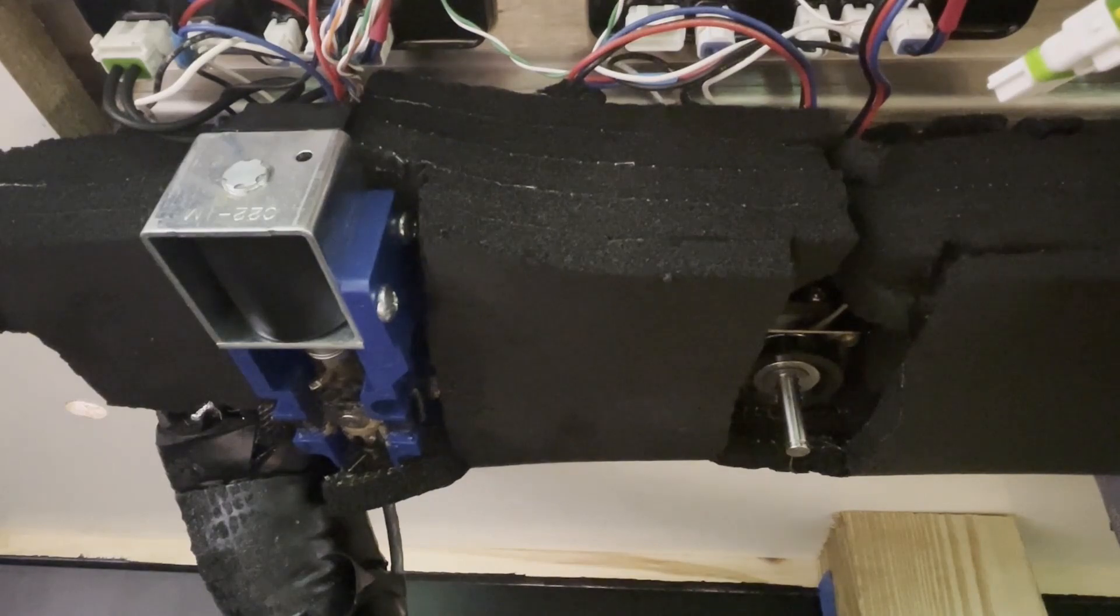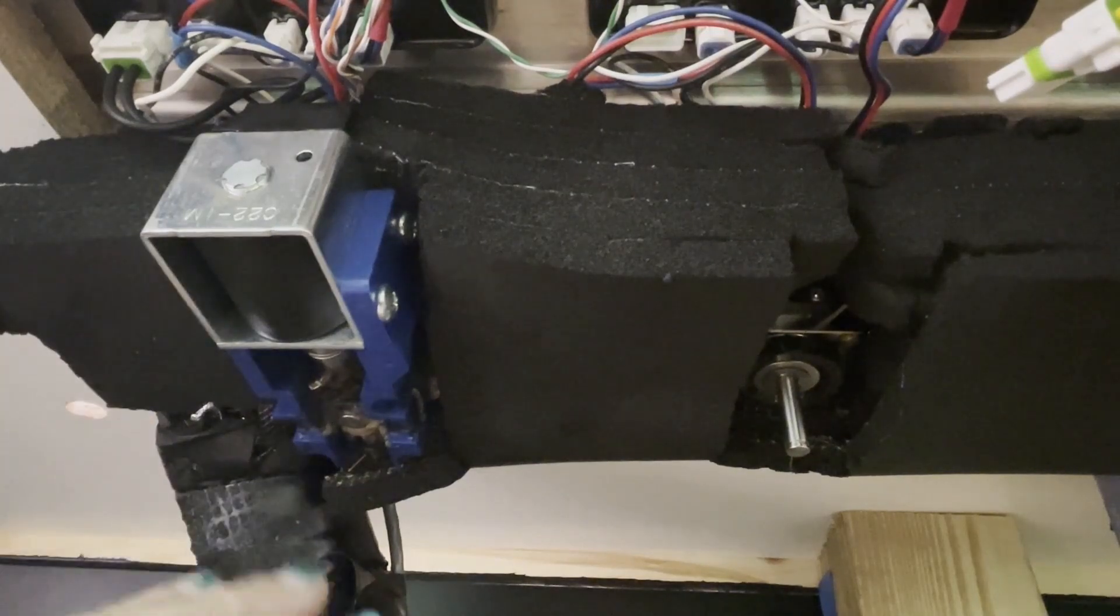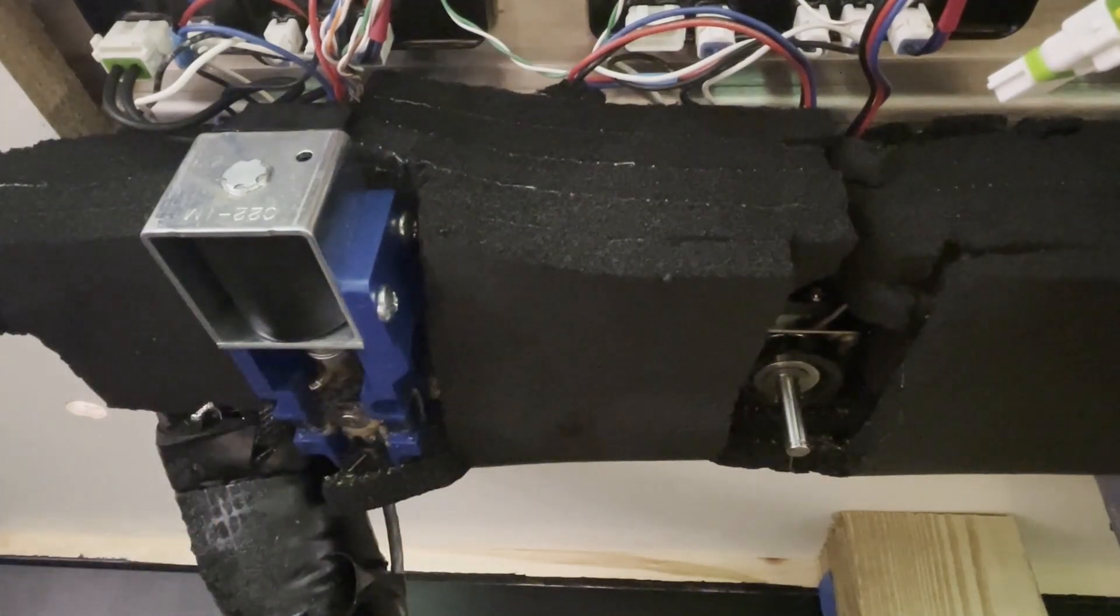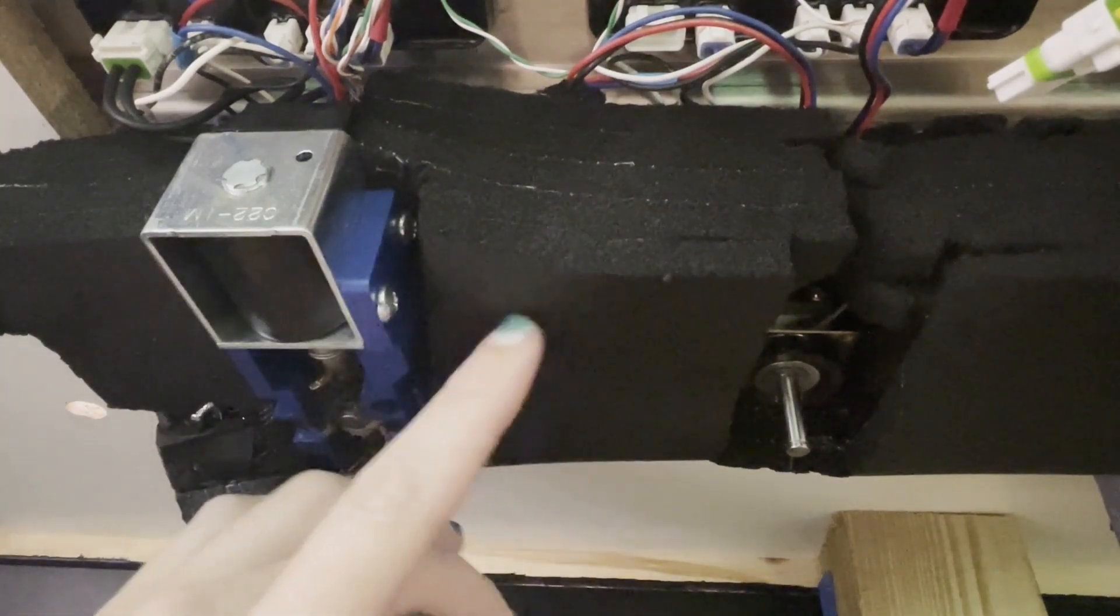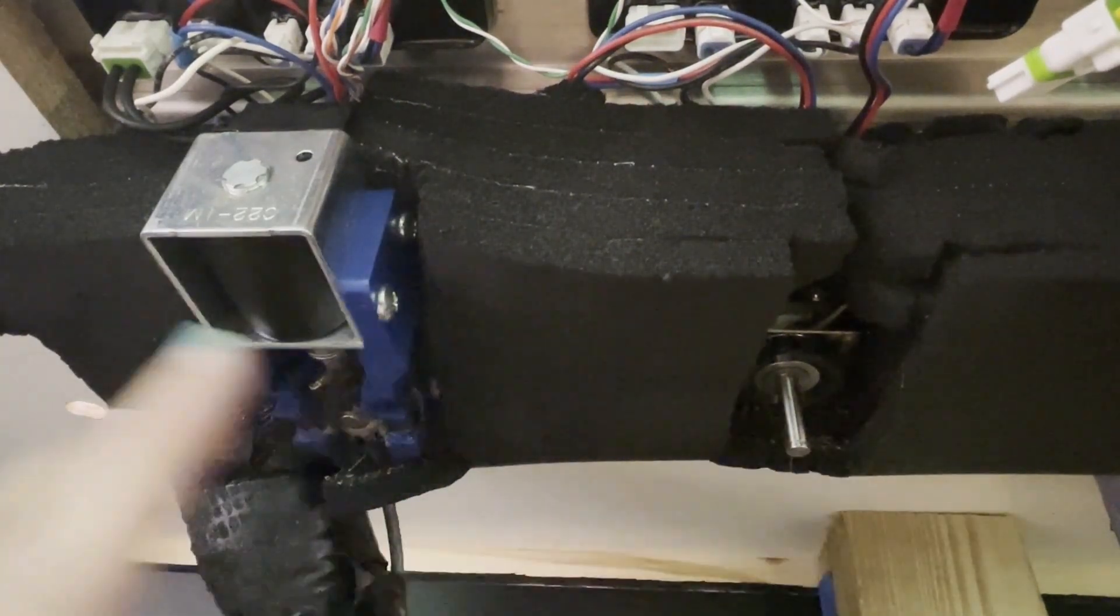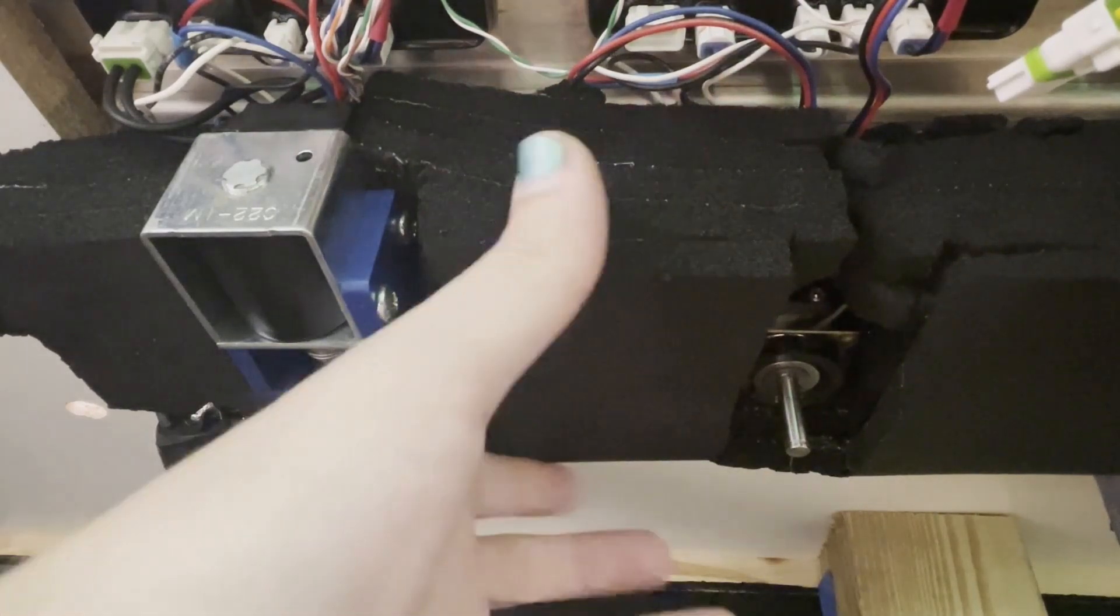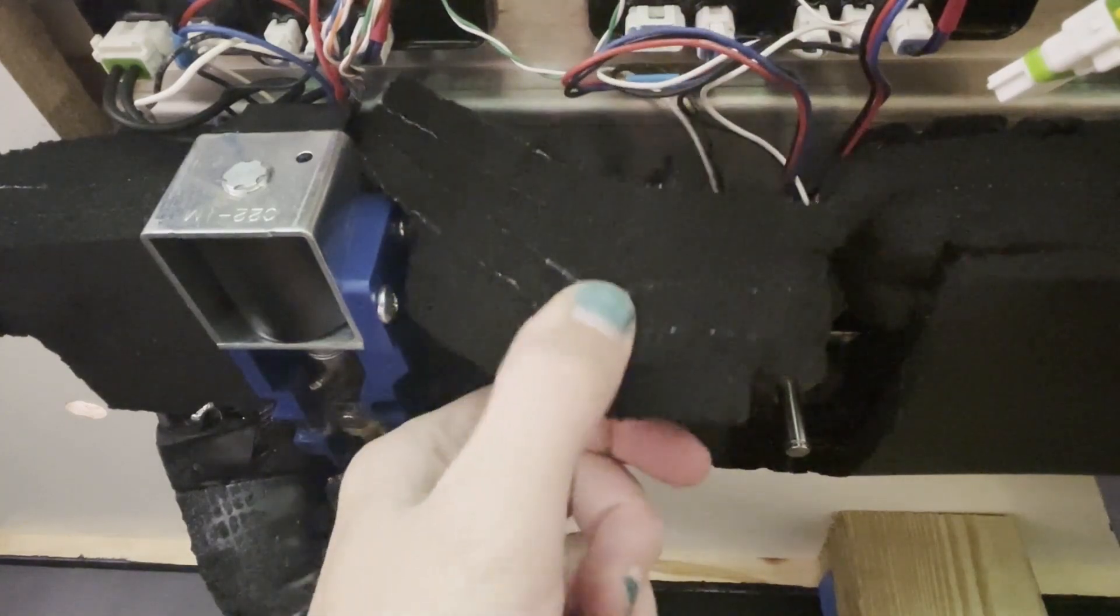Alright so here we are underneath our in-counter dispenser and there'll be different layers, different styles of foam depending on what year, what model your dispenser is. Sometimes you'll have more foam, sometimes less. Either way the foam pieces are in between each valve, and this bottom block is missing for instructional purposes here, you can just peel this back.